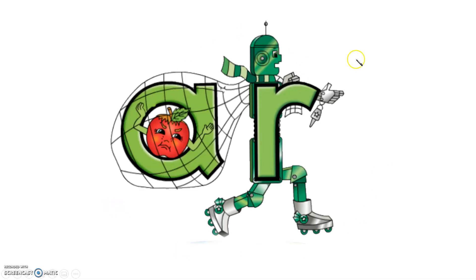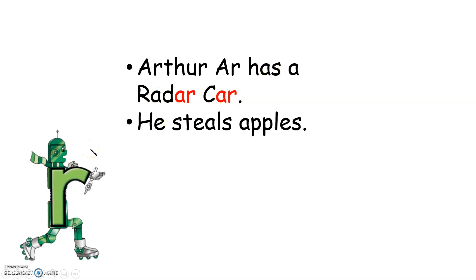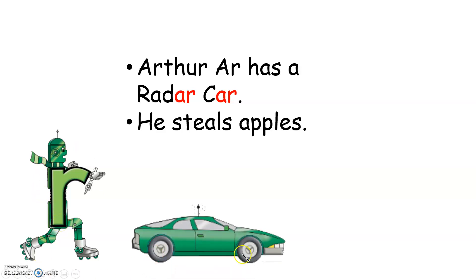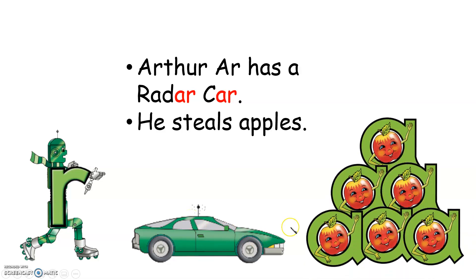Let's talk about this character. As you know, he's a robot. His name is Arthur R and he has a radar car. He steals apples. So here we have Arthur R — this is his lovely radar car and he loves to steal apples.